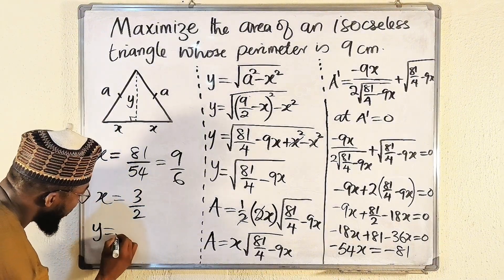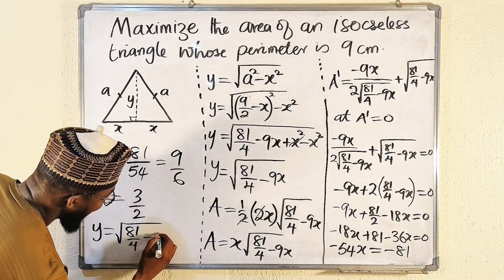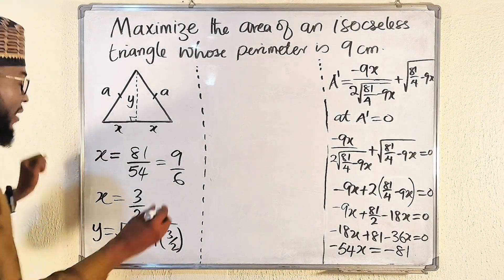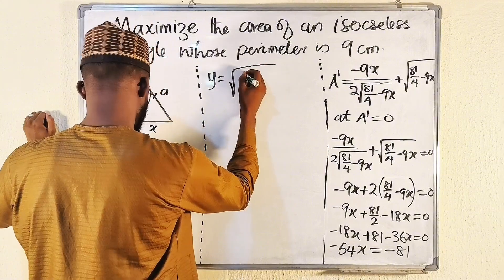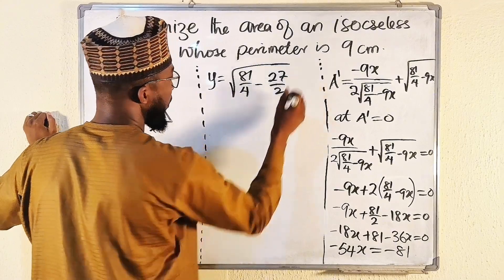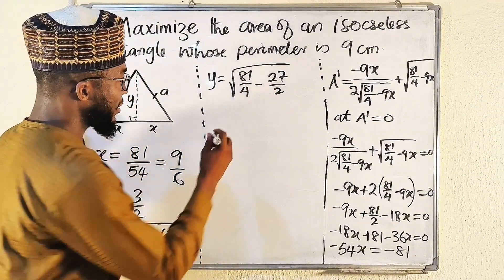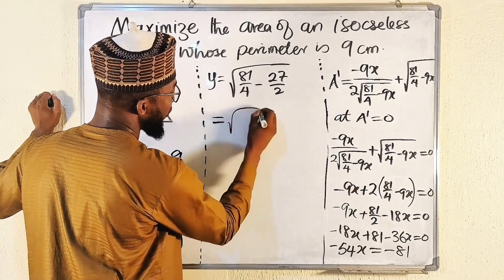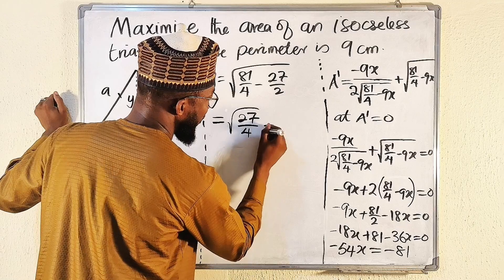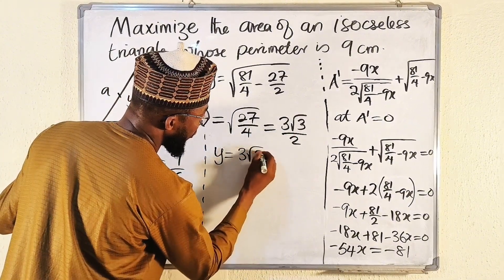Now we find y. y = √(81/4 − 9 × (3/2)) = √(81/4 − 27/2). Converting: 27/2 = 54/4, so 81/4 − 54/4 = 27/4. Thus y = √(27/4) = √27 / √4. Since 27 = 9 × 3, √27 = 3√3, and √4 = 2, so y = 3√3 / 2.